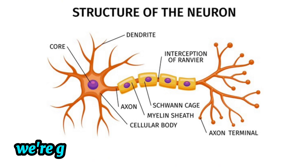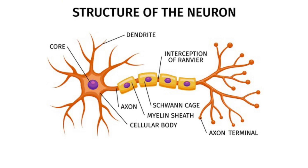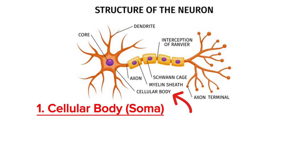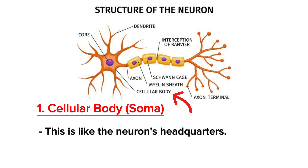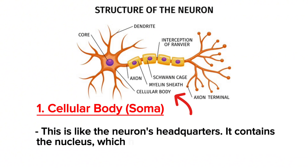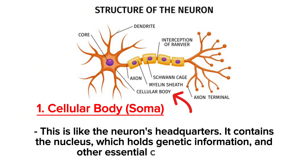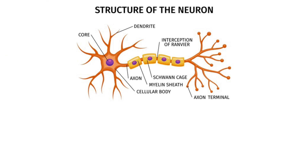Let's begin. We're going to start with the cellular body, which is known as the soma. This is like the neuron's headquarters — it contains the nucleus, which holds genetic information, and other essential cell components.